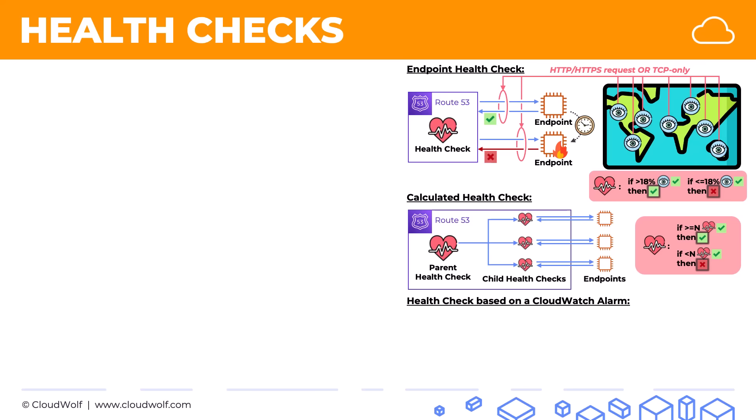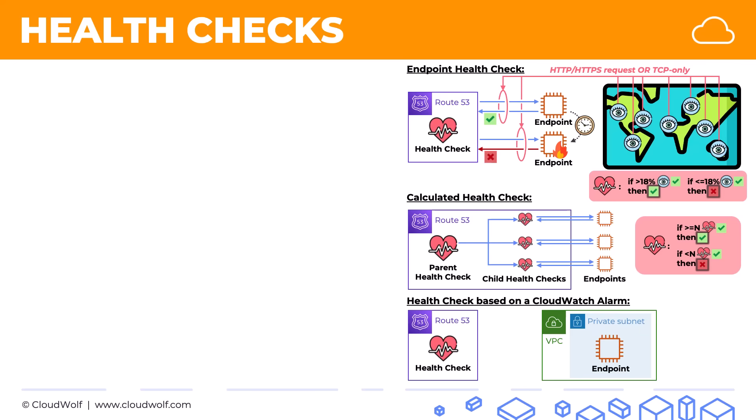Finally, the third and most versatile and powerful health check is the health check based on a CloudWatch alarm. Here's one use case: let's say you've got an endpoint in a private subnet, so you can't simply send HTTP or HTTPS requests in there. That's when you set a CloudWatch alarm to monitor this EC2 instance, and you set up the health check to monitor that CloudWatch alarm. The state of the health check will depend on the state of the alarm. It doesn't have to be used with a private subnet endpoint — it can be used with any kind of endpoint, and it gives you more versatility than other health checks.